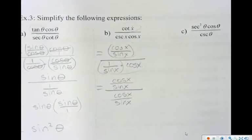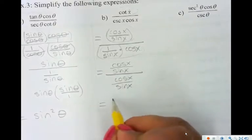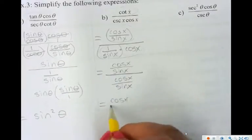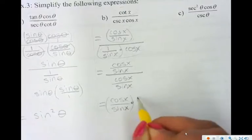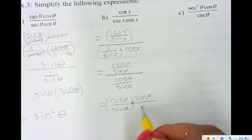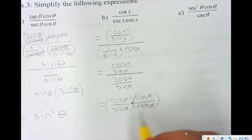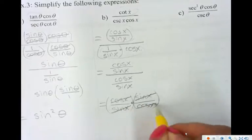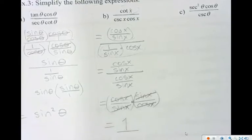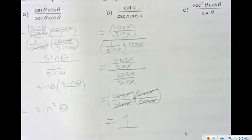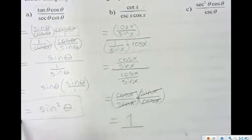What do you predict the answer is going to be? Because it's the same thing over the same thing, right? Now if I wanted to go a little further and actually show that step, I can write cos x over sin x times the reciprocal of the denominator which is sin x over cos x. Reduce, reduce, reduce, and that equals one. Nice, beautiful.